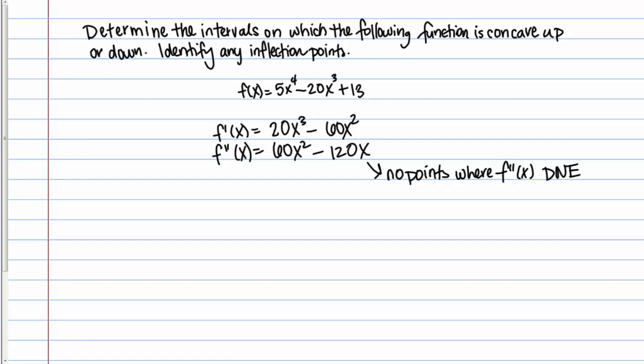Next, we move on to finding the places where it equals 0. I need to solve the equation 0 equals 60x squared minus 120x. It looks like I can pull out a 60 and an x and then be left with x minus 2. That factored pretty nicely.